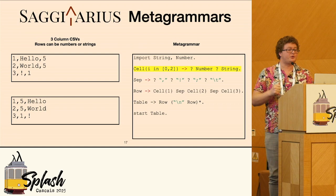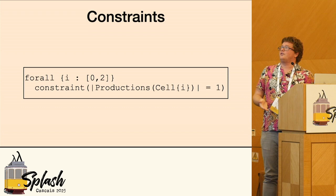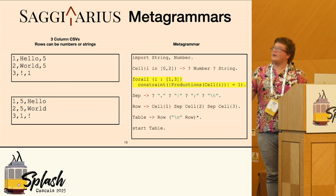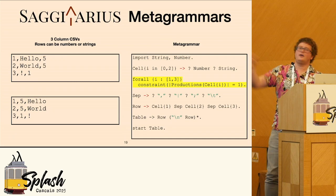So what I want to do is constrain this. I do this with constraints. I'm going to add in this little constraint that says that the number of productions of each cell I is going to be equal to one — we can only have one production for each cell I. This then just constrains the search space to be exactly either number or string. And I should also do this for separator, although I didn't include it for space on the slide.